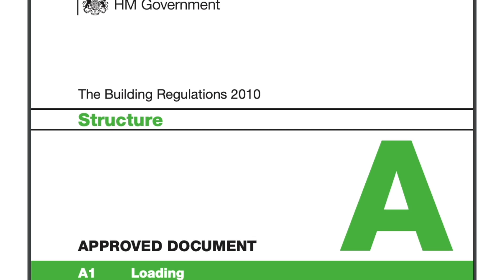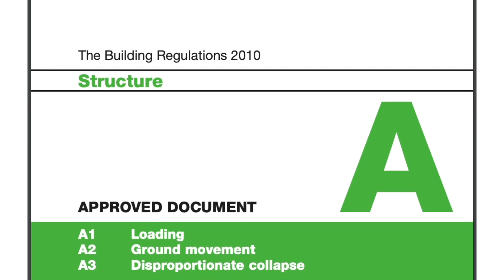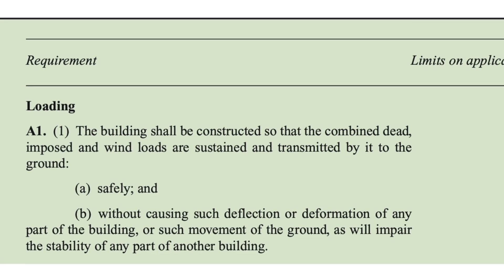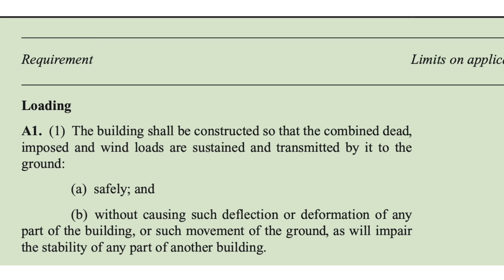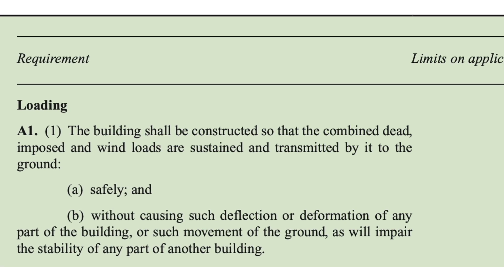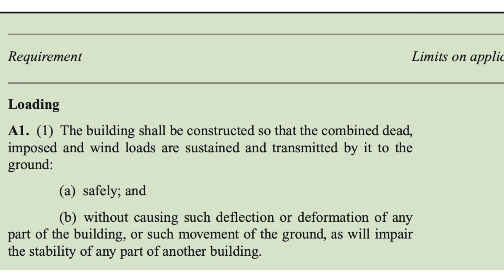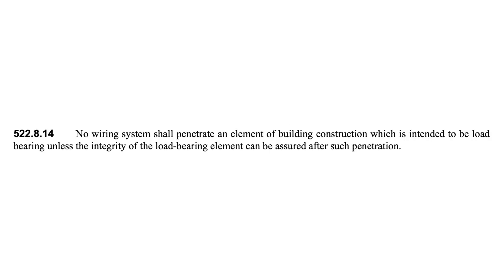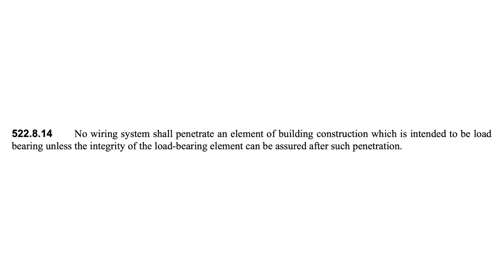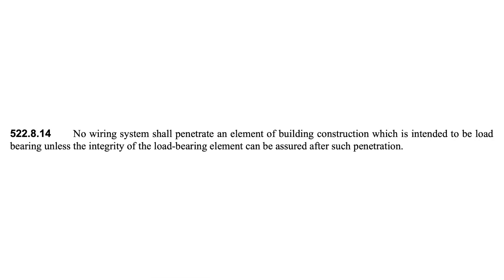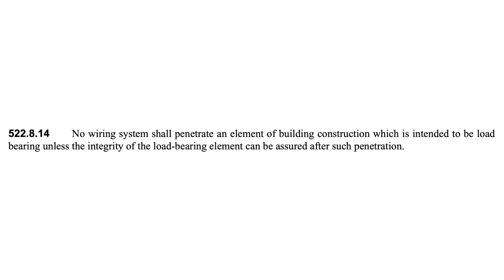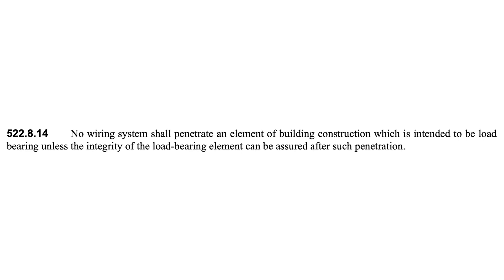What do the regs say about drilling through joists? Part A of the building regulations specifies that buildings shall be constructed so that loads are sustained and transmitted to the ground: a. safely and b. without causing such deflection or deformation of any part of the building or disproportionate collapse. Furthermore, Regulation 522.8.14 of BS7671 states that no wiring system should penetrate an element of construction that is intended to be load bearing unless the load bearing ability of the element remains satisfactory after such penetration.